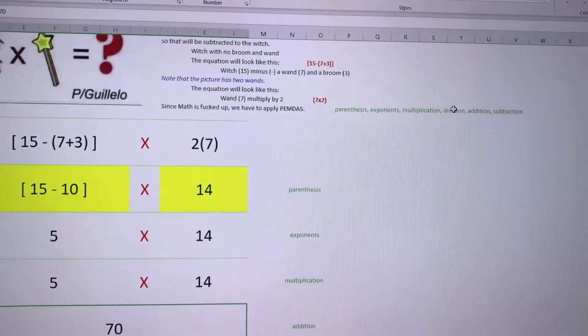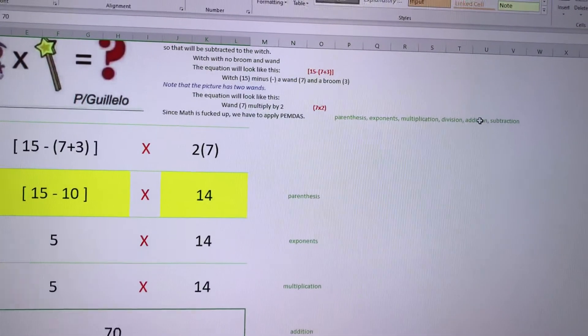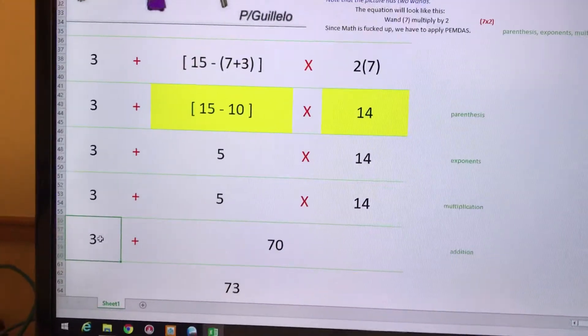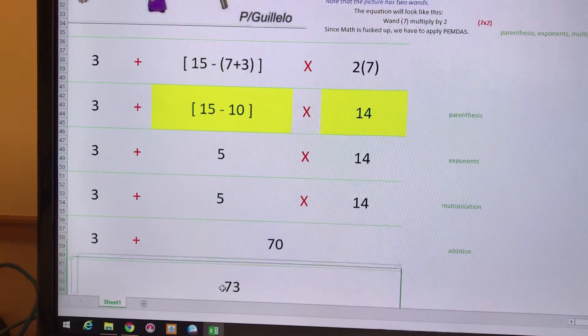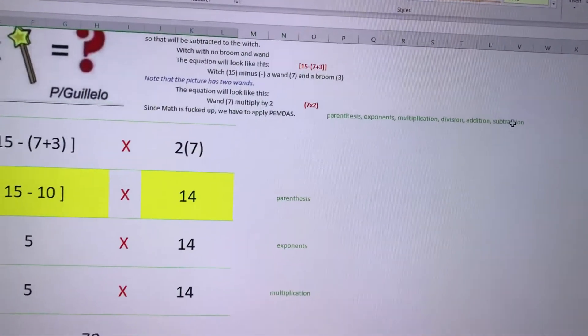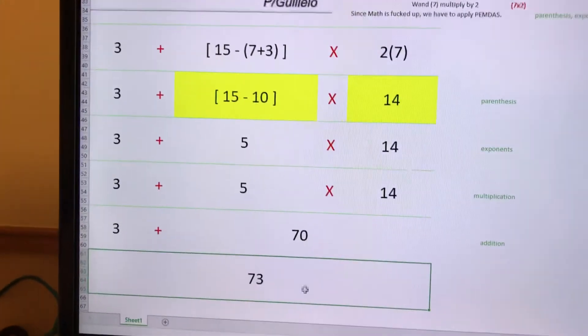Next is addition, so I'm gonna add 3 plus 70, as you can see right here. Then I come up with 73. There's nothing to subtract, so the answer for my computation is 73.